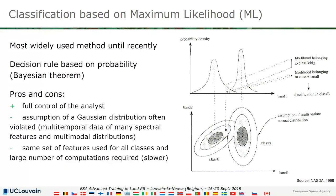The main advantage of this algorithm is that there is full control — you can totally control the algorithm. It is easy to understand why a pixel belongs to class A or to class B, and if you repeat the same algorithm in the same conditions you are sure that you will get the same result, which is not the case with most other supervised classification methods.